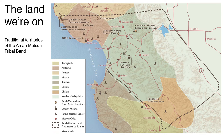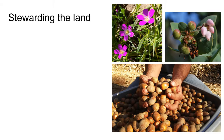The dotted line on the map here outlines the traditional lands of the Amamutsun, which, as you can see, includes not just much of Santa Cruz County, but all or portions of San Benito, Monterey, Santa Clara, and San Mateo counties.